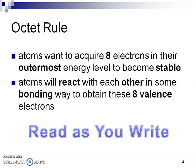No matter how many valence electrons an atom has, it's going to want to acquire eight electrons in its outermost energy level to become stable. This is what we call the octet rule — octet meaning eight. All atoms want eight valence electrons in order to become stable, so they're going to react with each other in some bonding way to obtain these eight valence electrons and become ions.